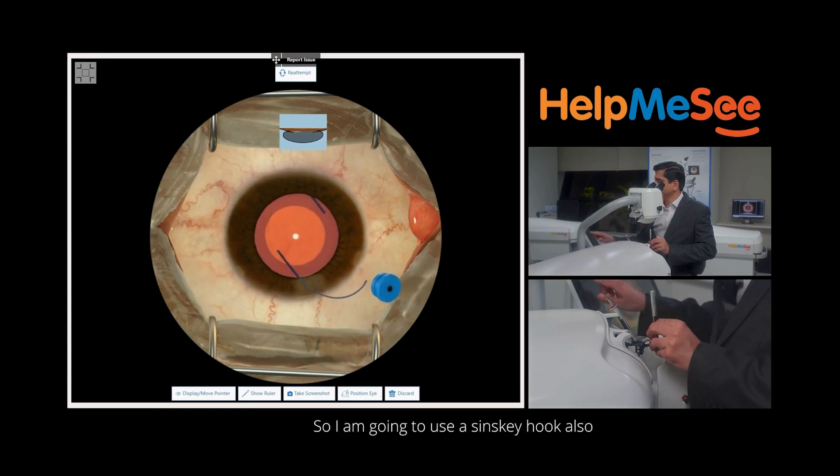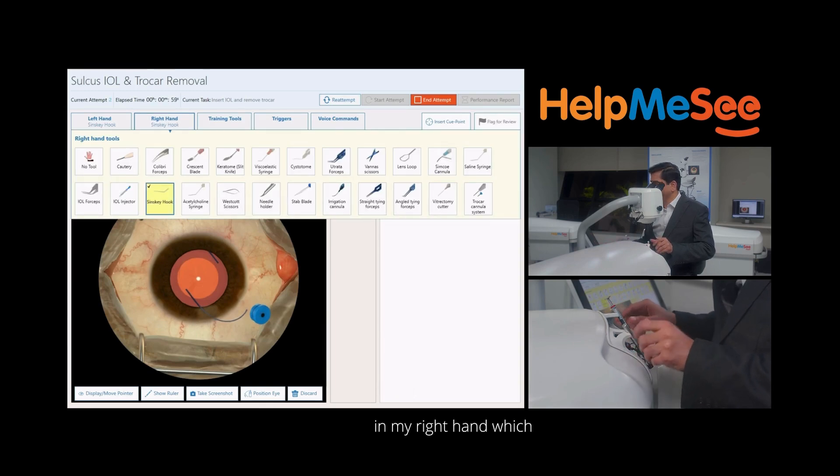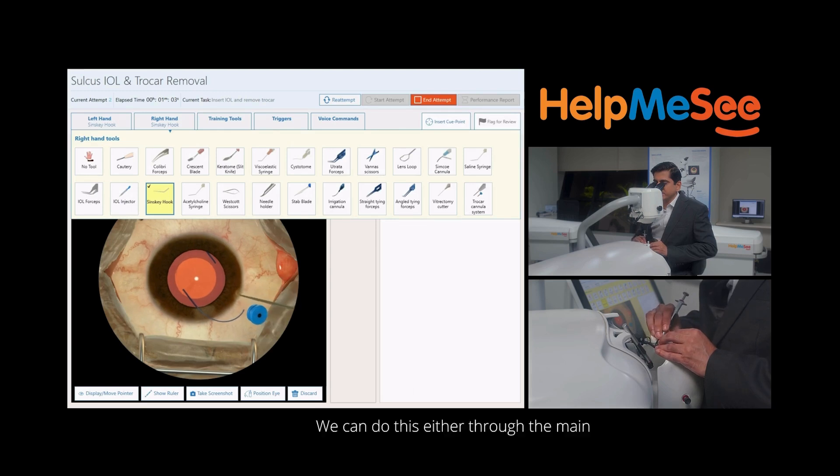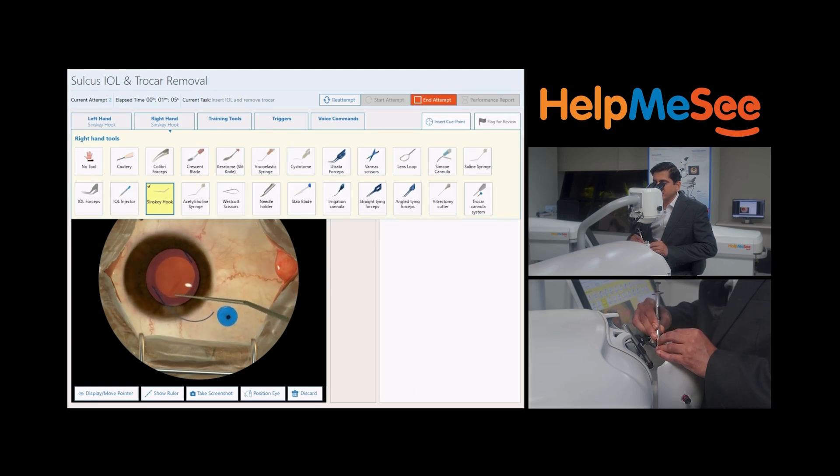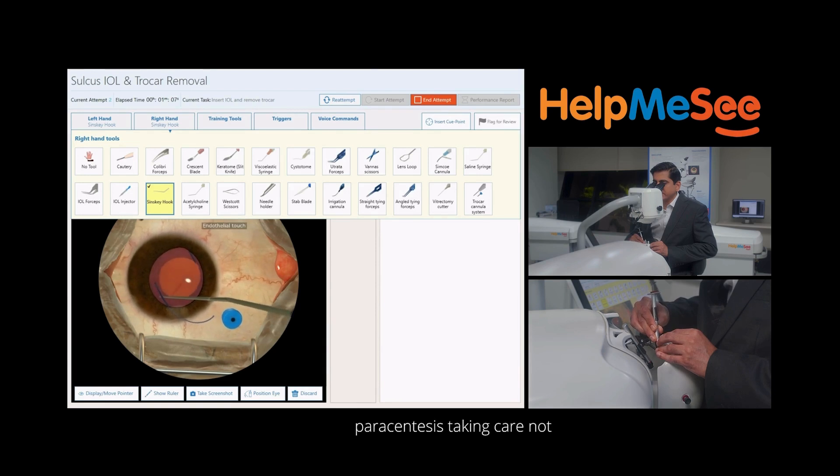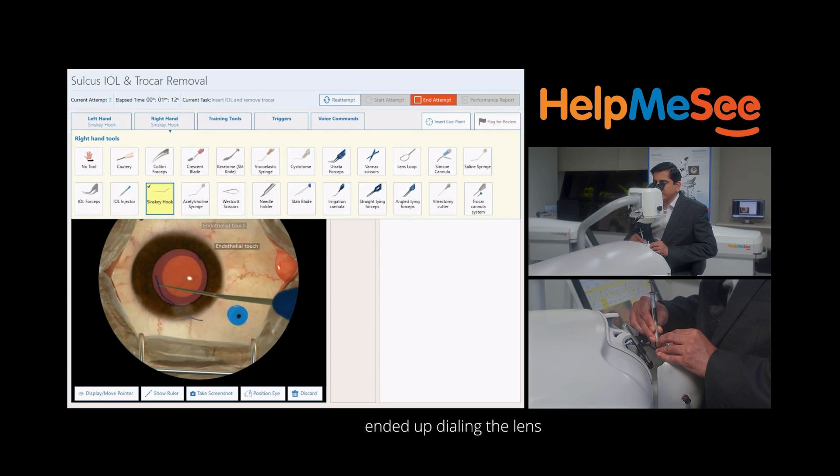I am going to use a Sinskey hook also in my right hand which will help me to dial this lens correctly in place. We can do this either through the main incision or through the parasynthesis taking care not to damage or touch any of the structures. In this case we ended up dialing the lens correctly inside the sulcus.